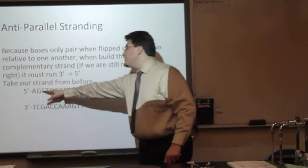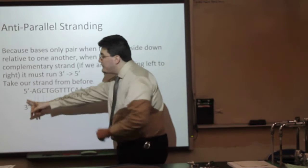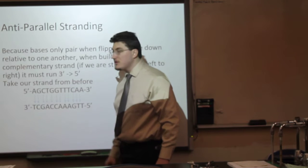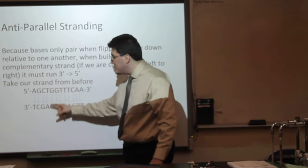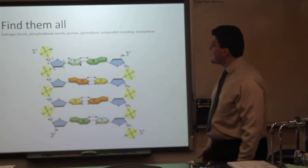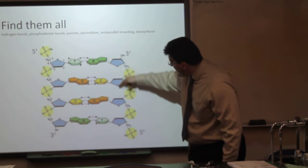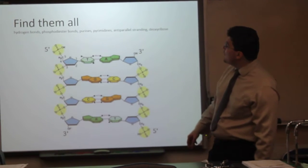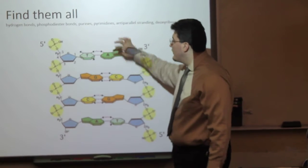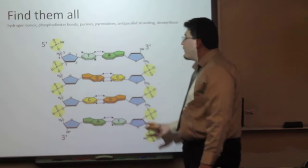So, 5' here: A, G, C, T, G, G, T, T, T, T, C, A, A — 3' prime. Then the anti-parallel must start at 3' over here and end at 5' over here. The complementary base: A with T, G with C, C with G, T with A, etc. That gives us the anti-parallel double stranding — 5' to 3', 5' to 3'. We have our deoxyribose sugars, our purines which have two rings, our pyrimidines which have one ring, and our phosphate groups in yellow.